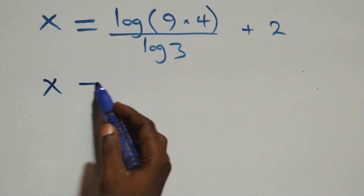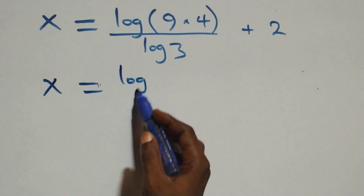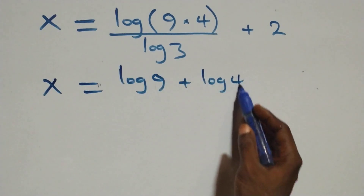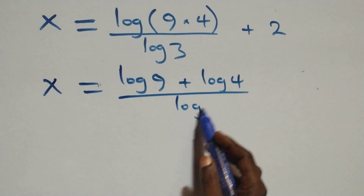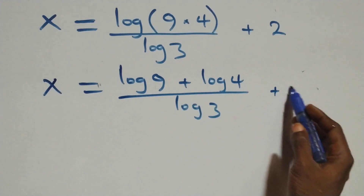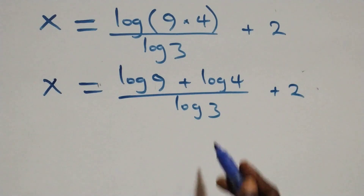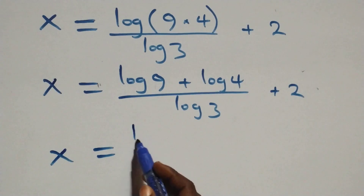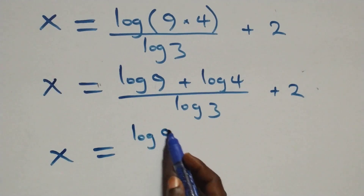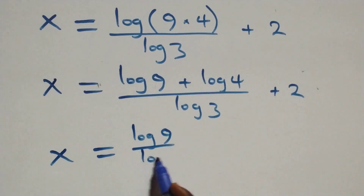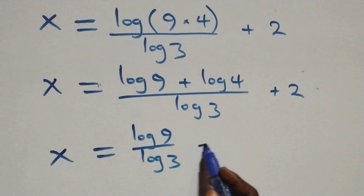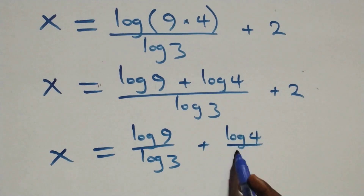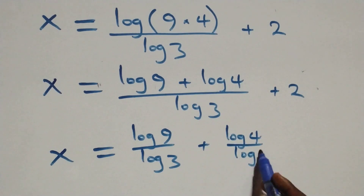We write it as x equals log 9 plus log 4 over log 3, plus 2. We separate this into two fractions: x equals log 9 over log 3 plus log 4 over log 3, plus 2.